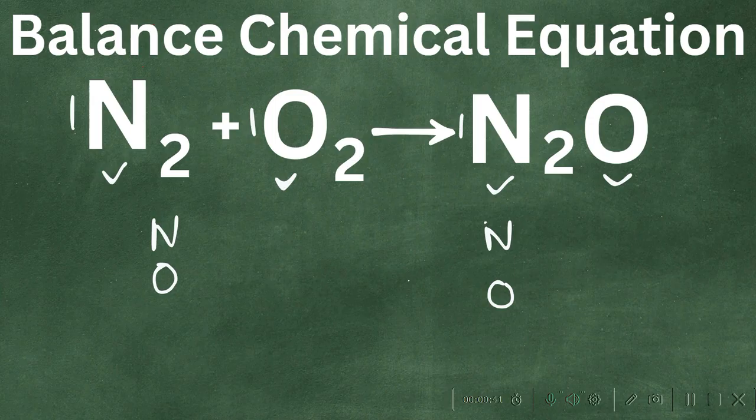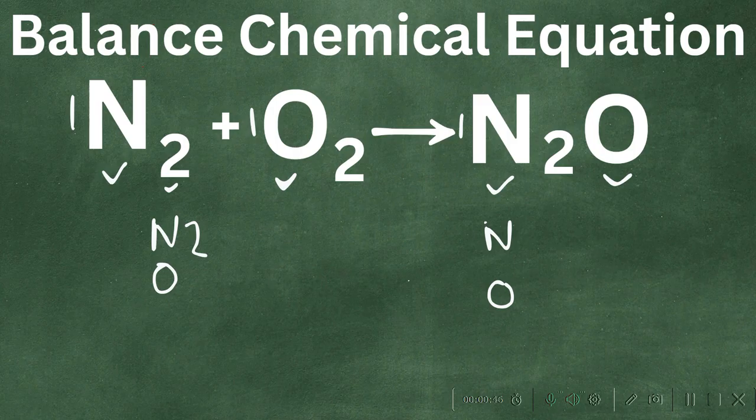Now let's count. We have 2 nitrogens, and 1 times 2 with oxygen, we have 2 oxygens.